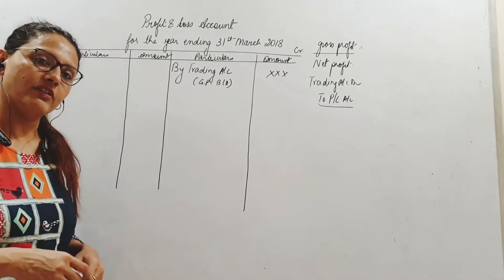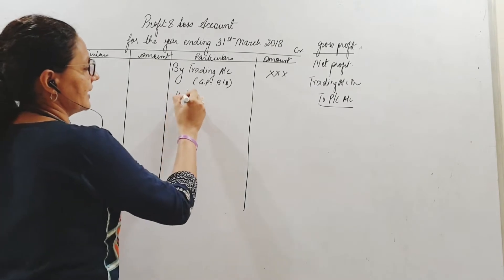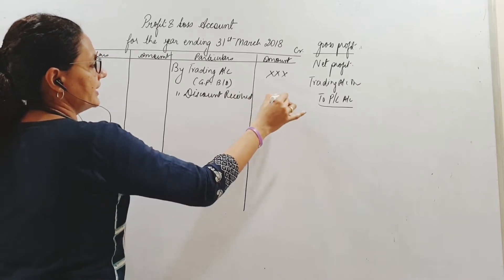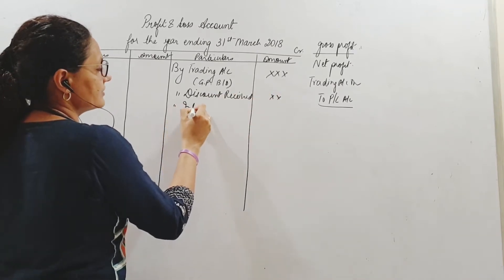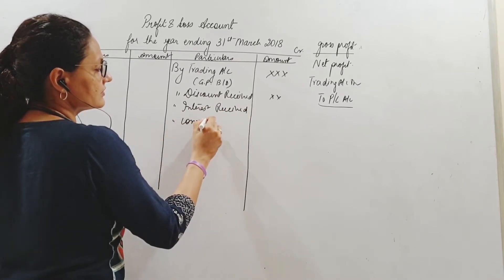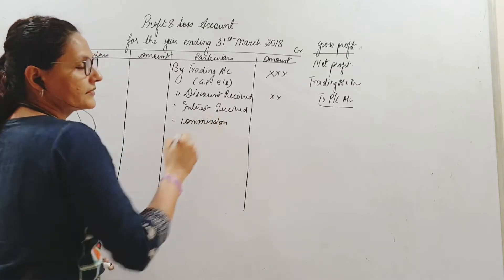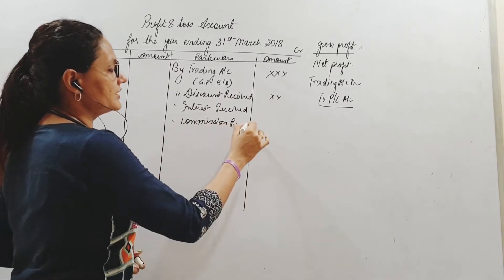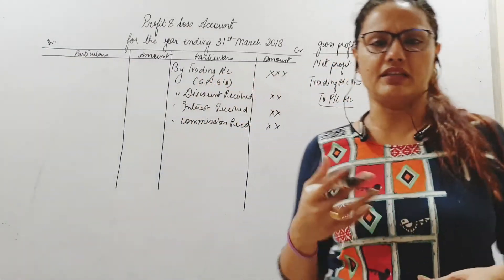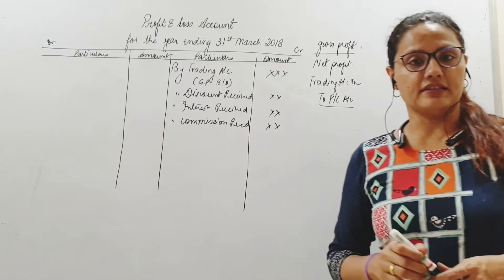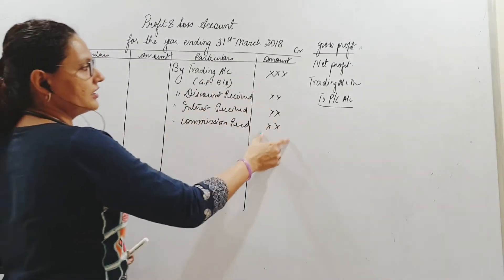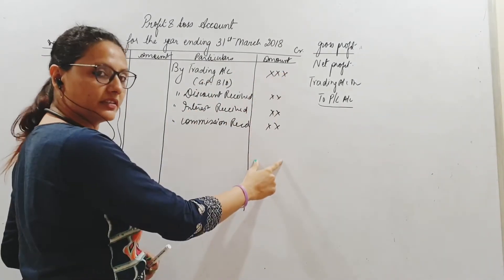What can be the other incomes for the firm? We can have discount received, interest received, commission received — these are a few examples. We can also have interest on investments, rent received, and profit on sale of asset. So all these the firm is going to receive and they will add to the income side.